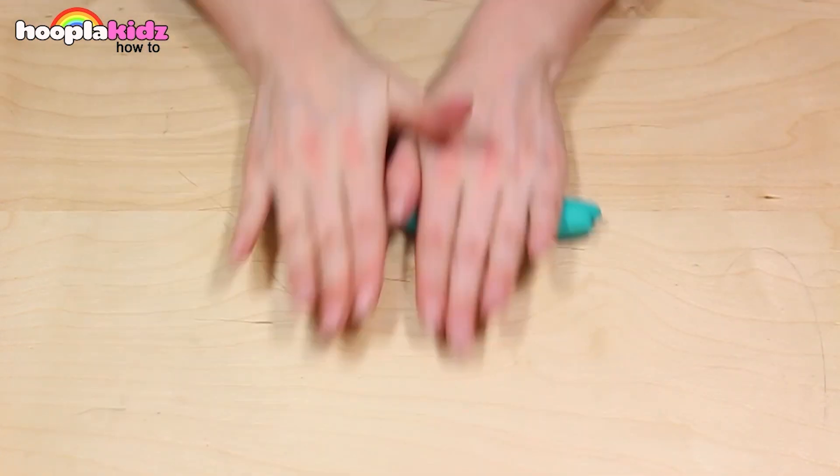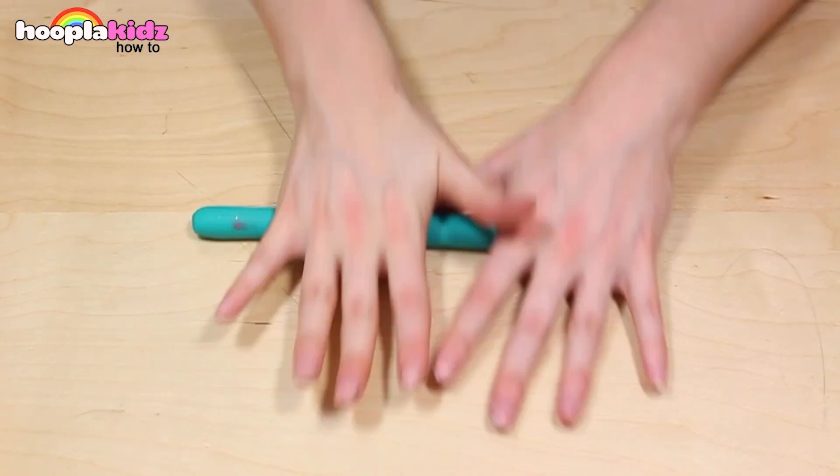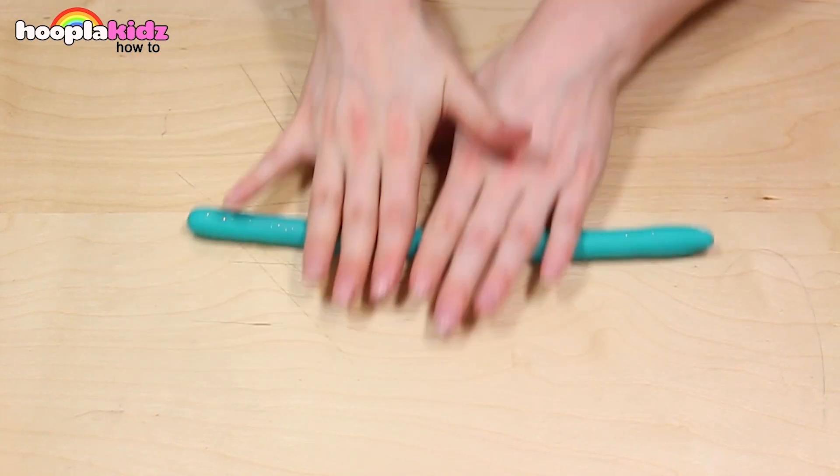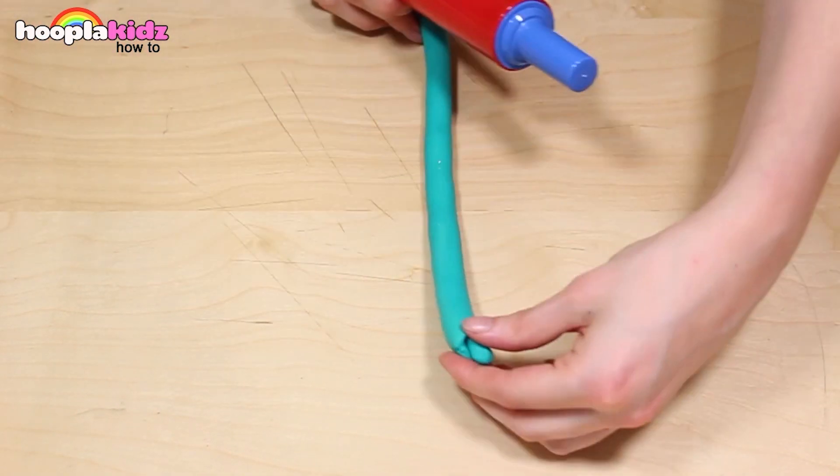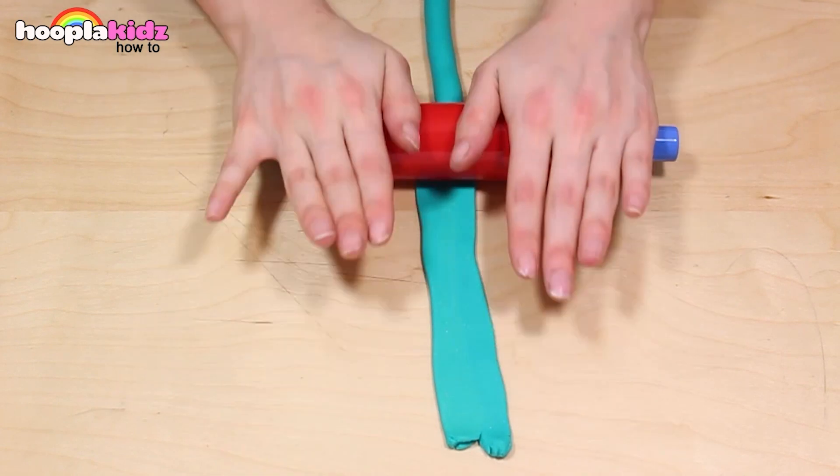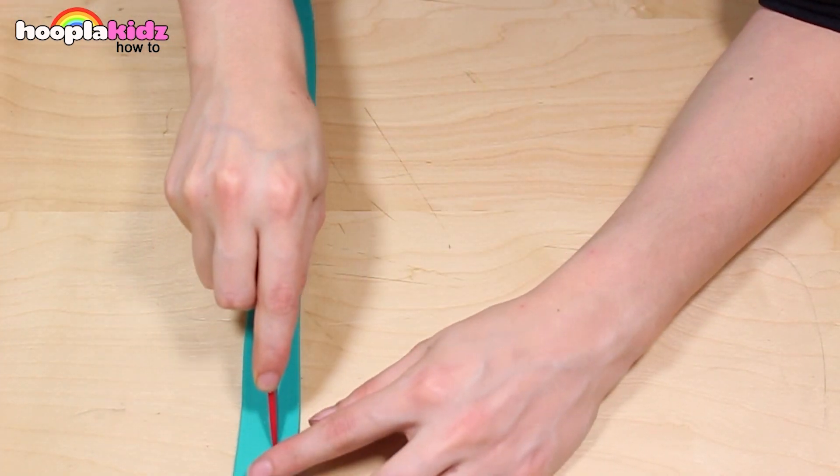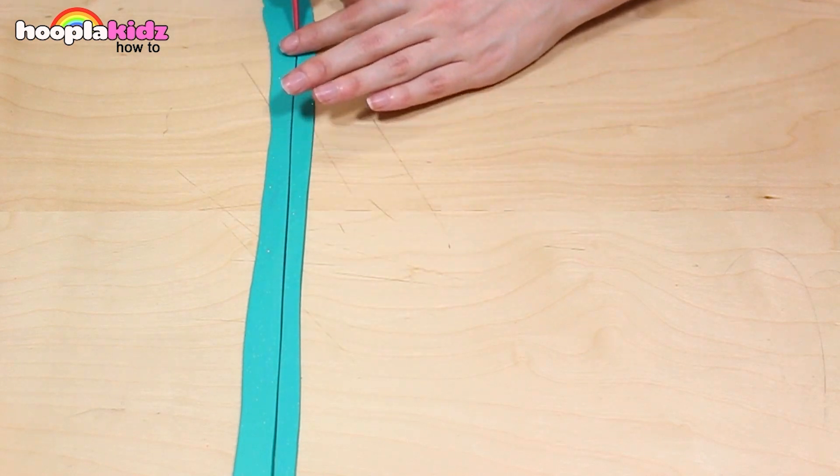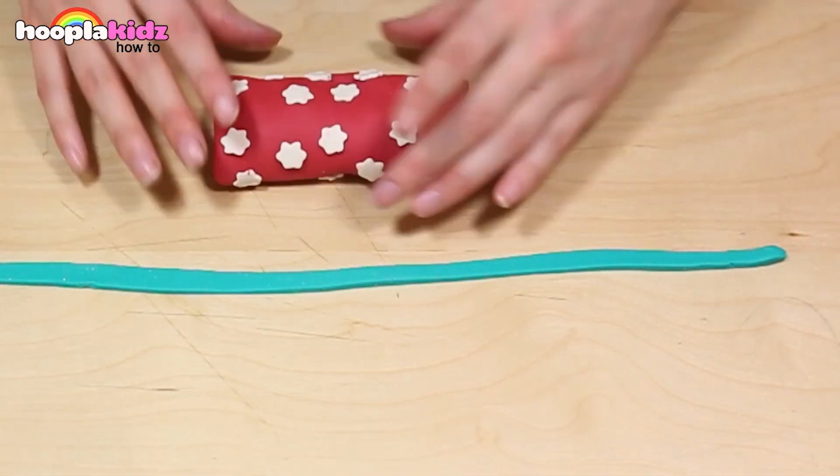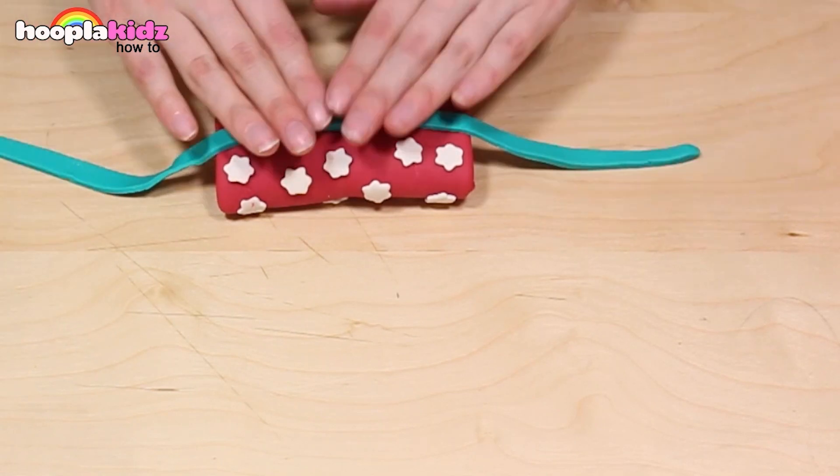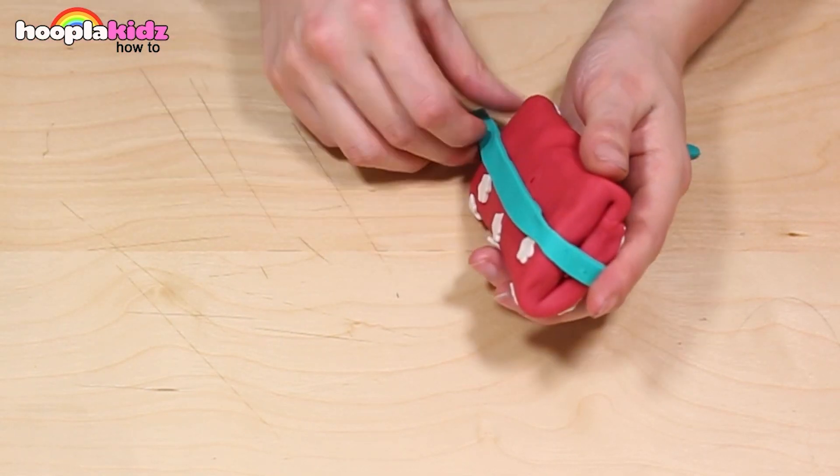Of course we need to make a ribbon. I think bright blue will look great on this present. I'm making it a bit thicker than before. Don't forget we want to do one lengthways and then the other across the middle.